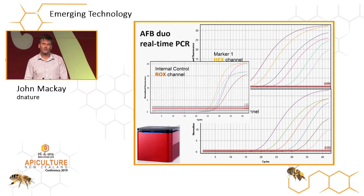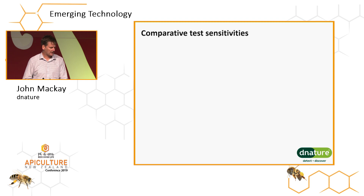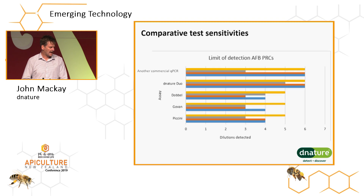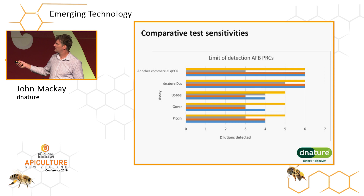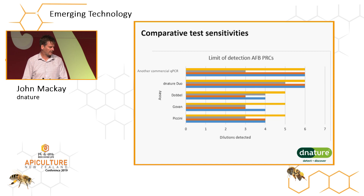We also have a third reaction happening, which is a piece of DNA that should amplify in every reaction. When that happens, we know we've had a good PCR process. Looking at comparative test sensitivities — and as a company in Gisborne we tend to just get on and do our thing — comparing our test across increasingly increasing dilution and looking at OIE protocols for AFB, our test on four different types of AFB sample was the most sensitive — more sensitive than the OIE protocols and also more sensitive than another commercial qPCR assay.